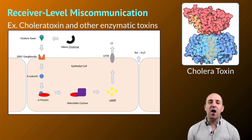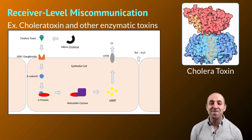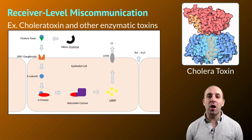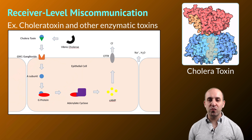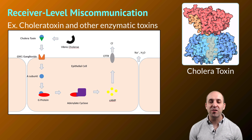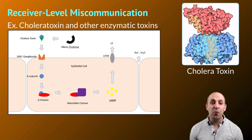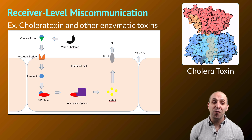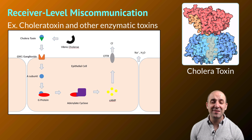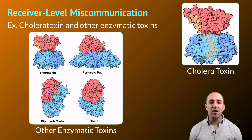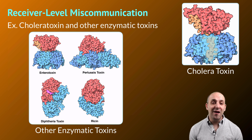Moving to receiver-level miscommunication, we'll focus on the role of cholera toxin and other enzymatic toxins and how they fool the cell into allowing them in. The cholera toxin exists outside the cell in a two-part structure: the red part is the actual toxin molecule, and the blue portion interacts with receptors on the surface of body cells. Binding of the blue portion to the receptor allows the red toxin molecule into the cell, where it triggers an irregular signal transduction cascade resulting in a massive outflux of chloride ions, followed by a massive outflux of water and the subsequent pronounced, frequently deadly dehydrating diarrhea that is the hallmark of cholera infection.